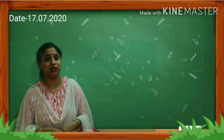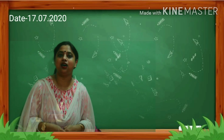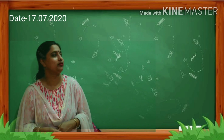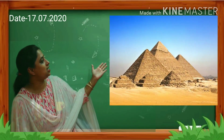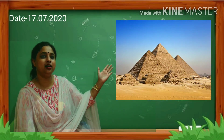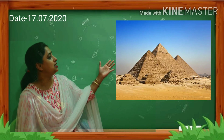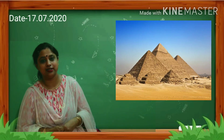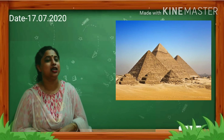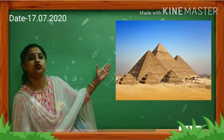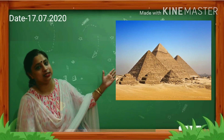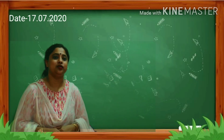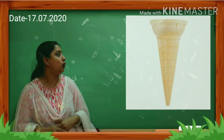Now let's meet some objects that are triangle in shape. What is this? This is a pyramid. What is the shape of the pyramid? It is triangle in shape.